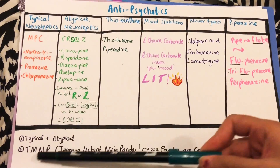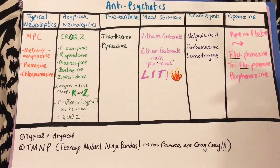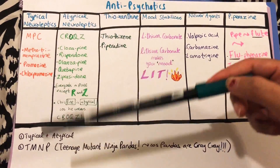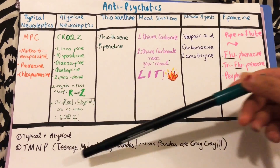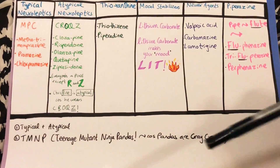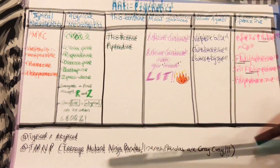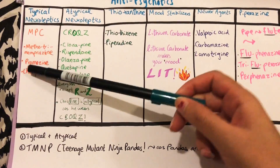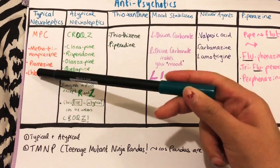First, you're going to write 'typical' and 'atypical' neuroleptics — or antipsychotics, whatever you want to say. Then TMNP. I remember this as 'Teenage Mutant Ninja Pandas' because pandas are crazy. So for typical, MPC: methortrimeprazine, promazine, and chlorpromazine.